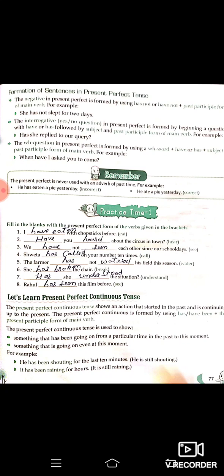The present perfect continuous is formed by using 'has been' or 'have been'. It is used to show something that has been going on from a particular time in the past to this moment. Example: 'He has been shouting for the last 10 minutes' — woh das minutes se chilla raha hai. 'It has been raining for hours' — kuch ghanton se baarish chal rahi hai, aur woh baarish abhi bhi jaari hai.